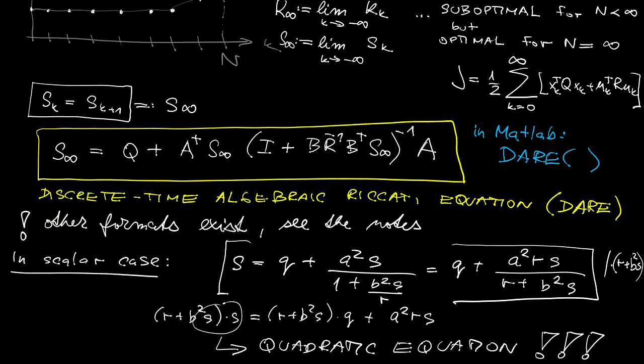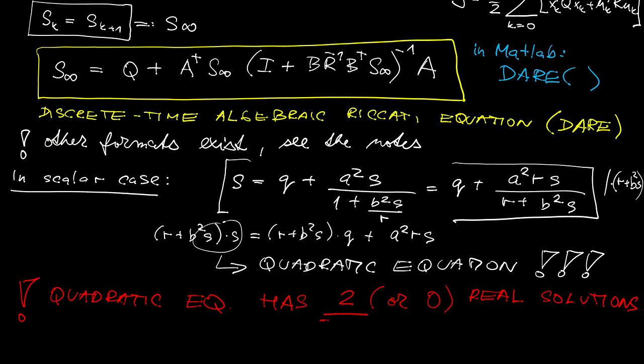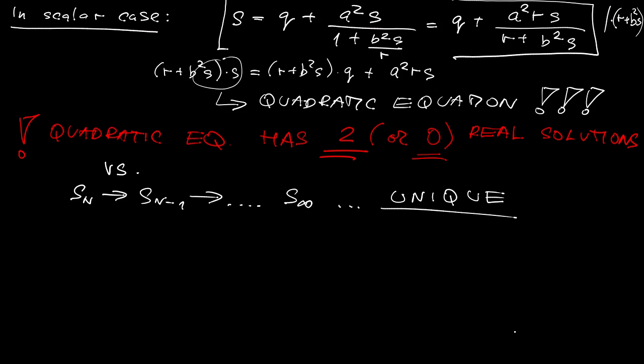And this is pretty useful insight because we know that a quadratic equation in the scalar case has two or no real solutions. But then compare it with the fact that the difference Riccati equation initialized by Sn converges to some s infinity uniquely. If it does converge, it will converge uniquely.